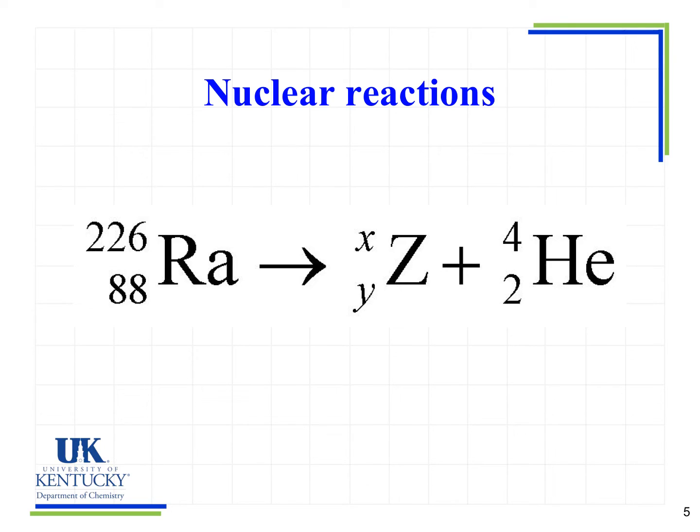So now we need to look at another reaction where there's something missing. Notice here one of our products is just listed as Z and we have X and Y for the atomic mass and the atomic number. And we need to figure out what this substance is and what the numbers are for X and Y.